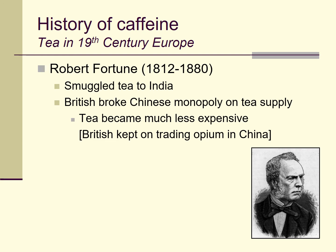As a result, because tea could be grown in India, tea became much less expensive and much more accessible to people of different economic means back home in Europe and even in America. And as a result — just kidding — the English continued trading opium in China for many years after that, as did other European countries and America as well. I'll talk about that in a future lecture when we discuss the opiates and the opium wars.